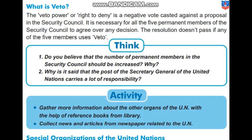If any of the five permanent members of the UN — we have seen there are five countries which are permanent members — if even one of those five countries uses veto power, that means if they do not agree over any bill or agreement that comes before them, they can use their veto right and the resolution will not pass. For the resolution to pass, all five permanent member countries must agree. Only then can it become a law for the entire United Nations.